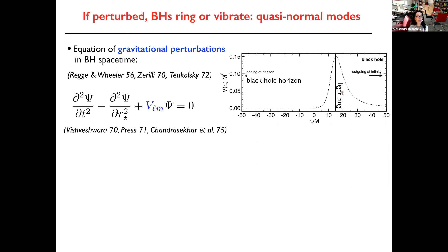For those who have background in general relativity and have studied the Schwarzschild spacetime: last time we discussed the innermost stable circular orbit, which is by definition the last stable orbit for a particle with mass. The light ring is actually an unstable circular orbit for massless particles — including photons and gravitons. This plays a certain role in determining the quasi-normal modes, and the potential has a peak around the light ring.